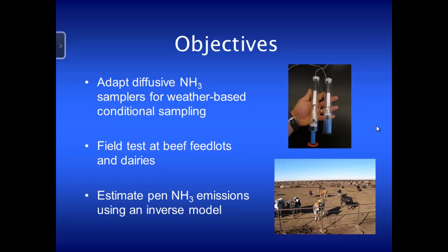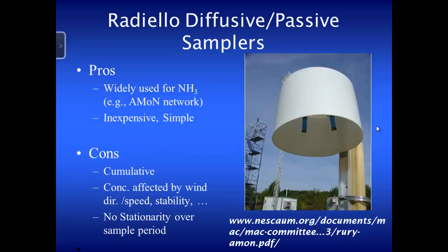We wanted to estimate pin source ammonia emissions using an inverse model. We're using these radiello diffusive samplers — or passive samplers — that are widely used these days; they're used in the AMON network. They're inexpensive and simple to use. The problem with deploying a continuous sampler at a feedlot is that it's cumulative, and concentration is strongly affected by wind speed. With calm winds you can have a cloud of 3,000 ppb ammonia sitting over your sampler for hours, saturating the inside.